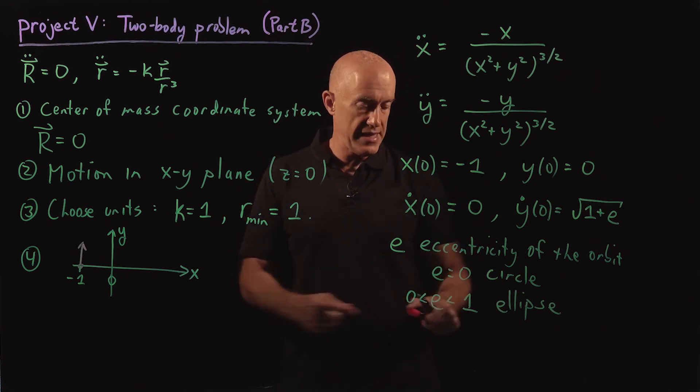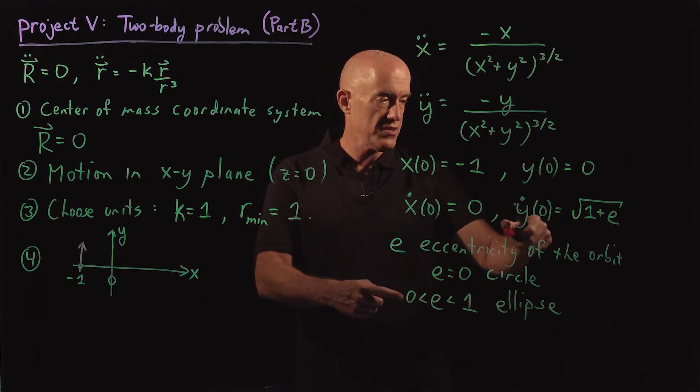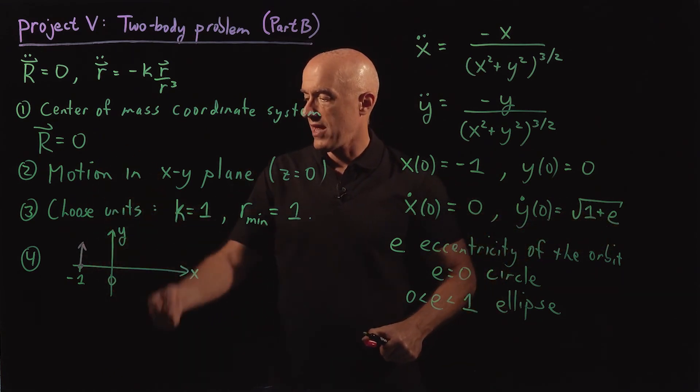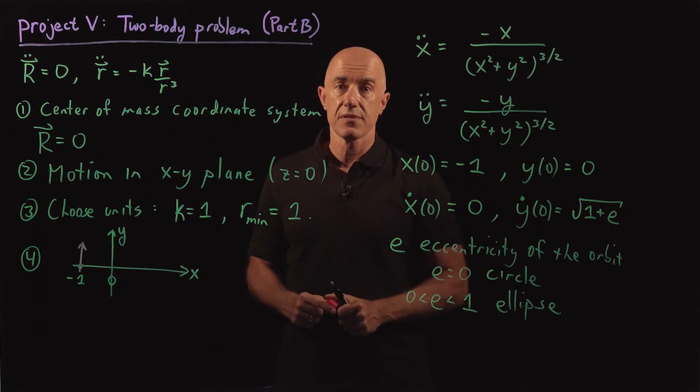If you start off with e that's between zero and one. So a velocity that's between one and two. And you'll end up with an ellipse.